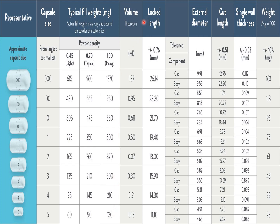The next column is volume — the amount in ml that can be filled if the medicament is a liquid, as discussed previously. The next is locked length, followed by the tolerance component. The tolerance component of the cap and body are given individually, and depend upon the external diameter, cut length, and single wall thickness.